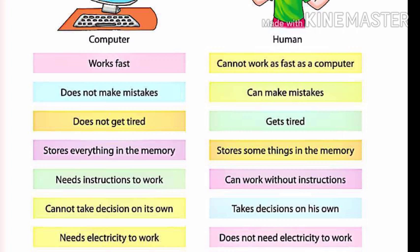A human being works fast, but not as fast as a computer. Humans can make mistakes and also get tired. However, humans can work without instructions and can take decisions on their own. Human beings do not require electricity. You can read these points on the screen — study the differences between the computer and human beings on your own.